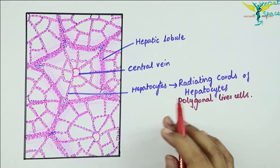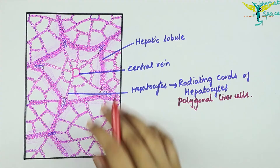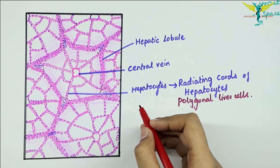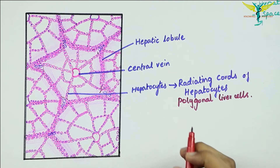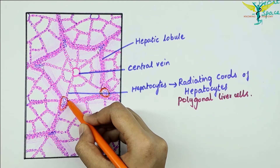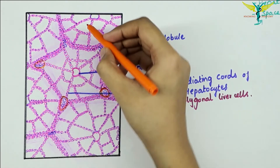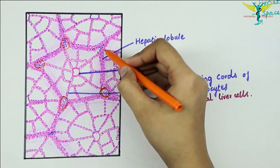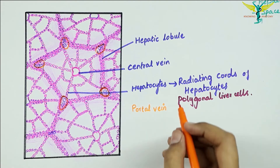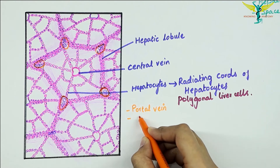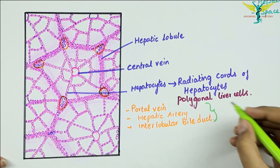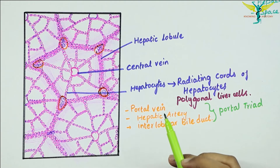Each angle of a hepatic lobule contains a branch of the portal vein, a branch of the hepatic artery, and an interlobular bile duct — this is the portal triad. At each corner of the hepatic lobule you can see a portal triad. The portal triad consists of a portal vein, a branch of the hepatic artery, and an interlobular bile duct — these three structures constitute the portal triad.